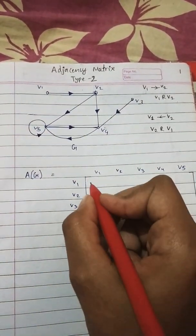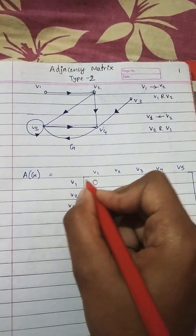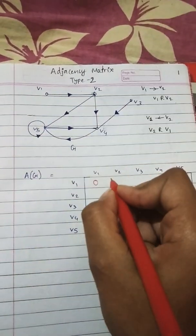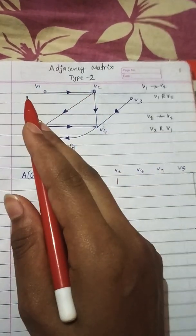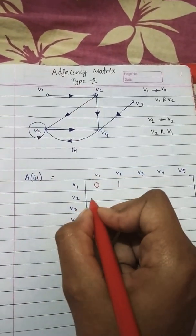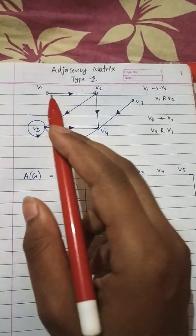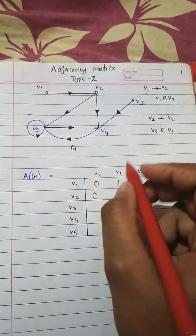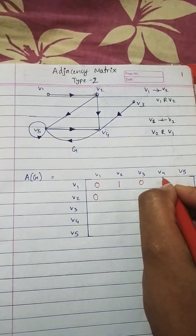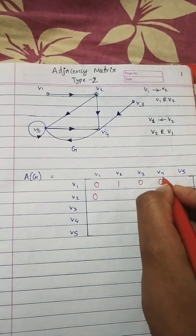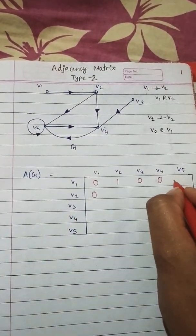Is V1 related to V1? No, therefore 0. Is V1 related to V2? Yes, so 1. But V2 is not related to V1, therefore 0. V1 related to V3? No relation at all, so 0. V1 related to V4? No relation at all, 0. V1 related to V5? No relation at all, 0.